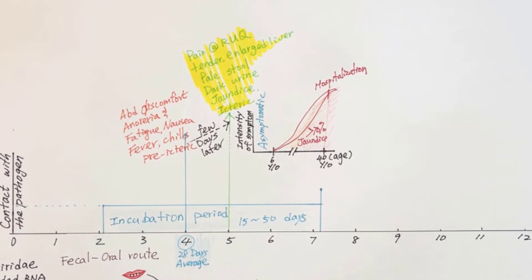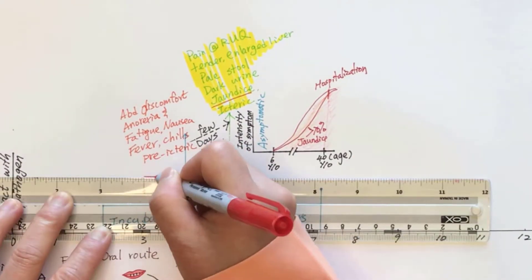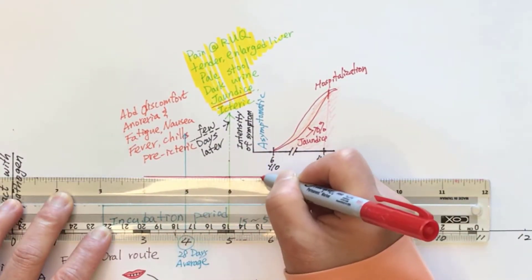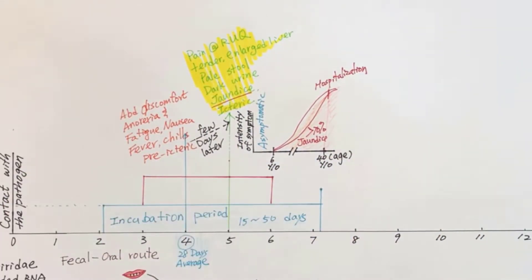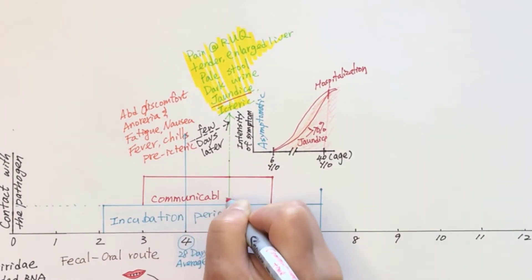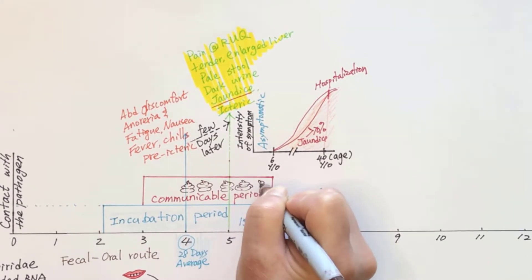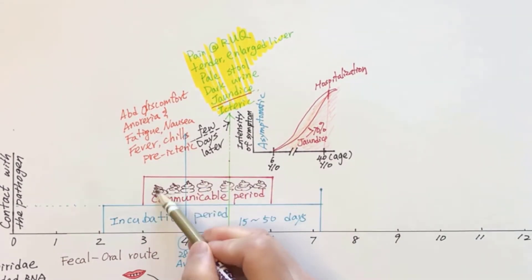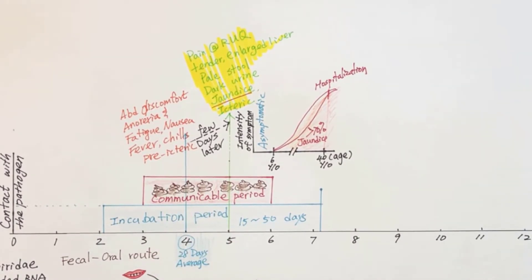Hepatitis A is a highly contagious infection. The viral concentration in stool stays high during the time period between two weeks before and one week after the appearance of jaundice or elevated serum liver enzymes. This period is the communicable period. The greatest transmissible time for this infection is before symptoms appear by nature, which cannot alert people to take precaution, especially the close contacts to the patient.